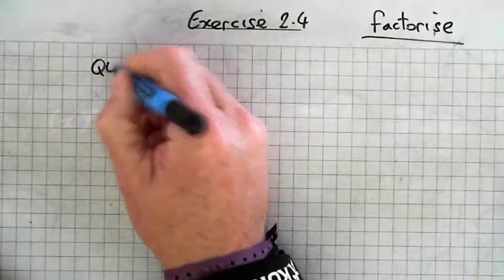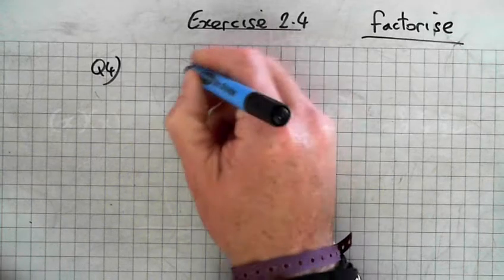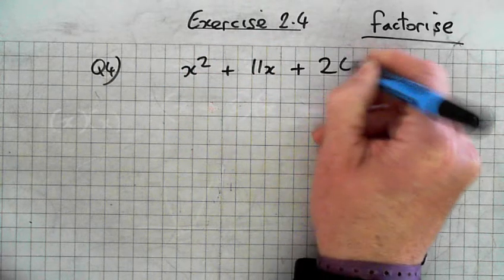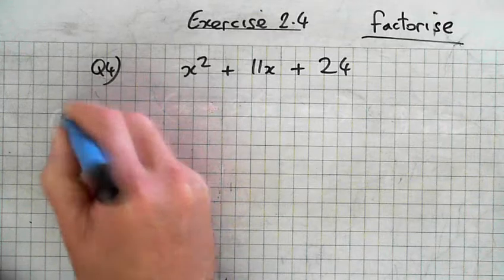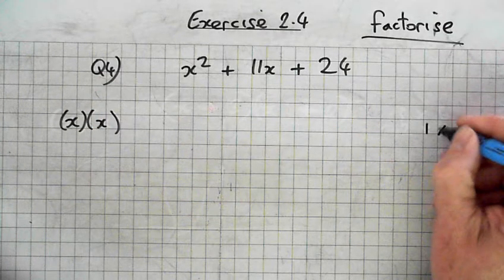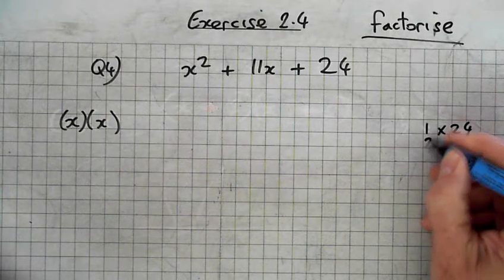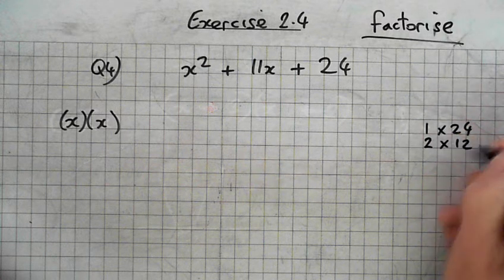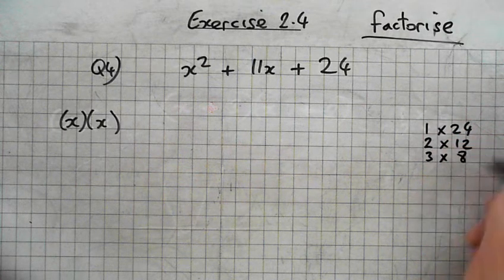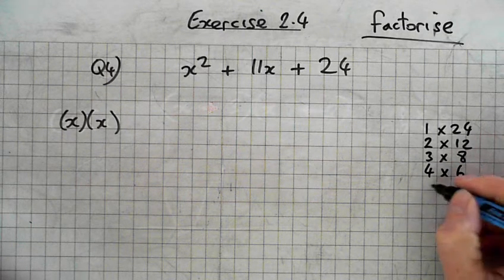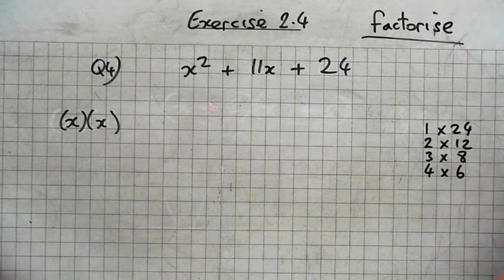Question 4. x squared plus 11x plus 24. The factors of x squared are x times x. The factors are 24. Call them out. 1 times 24. I'll start with 1. Does 2 divide into 24? Does 3 divide into 24? No. 3, 8 is 24. Does 4 divide into? Yeah. 5, 6. Well, we have a 6. So we can stop now.